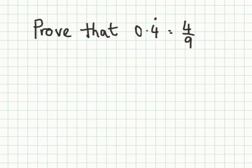This is quite a high level question and is probably classified near the grade A mark. It says prove that 0.4 recurring is equal to 4 over 9.